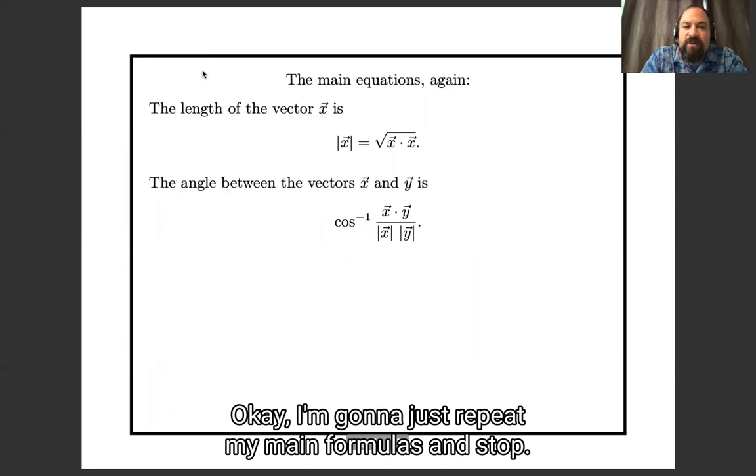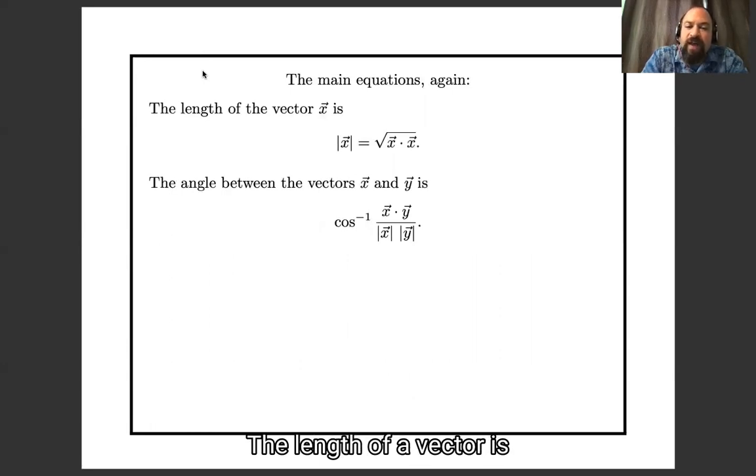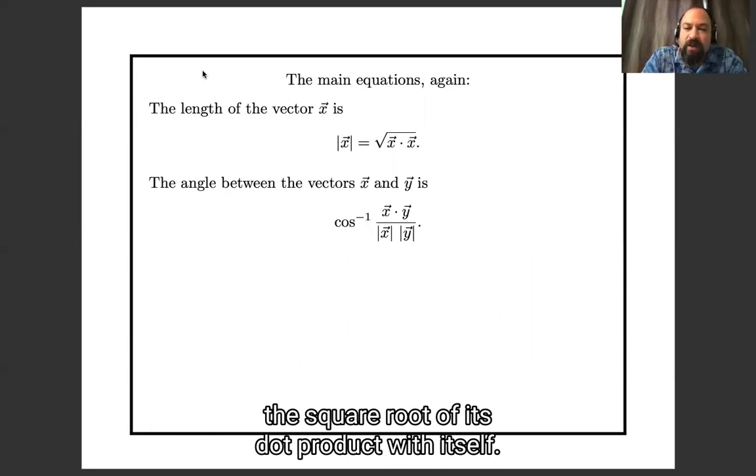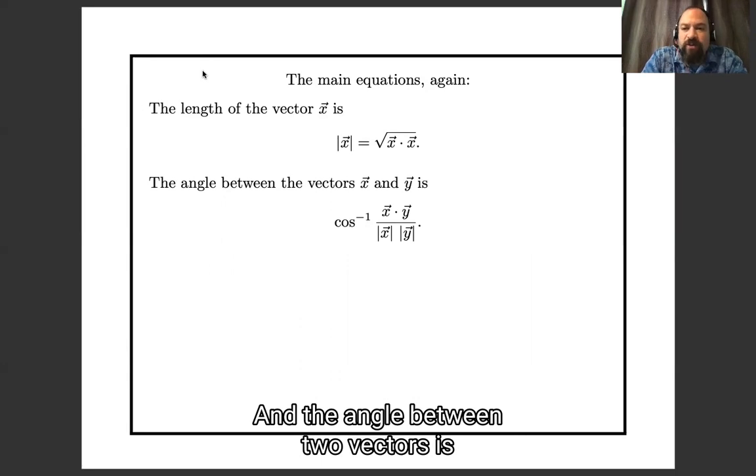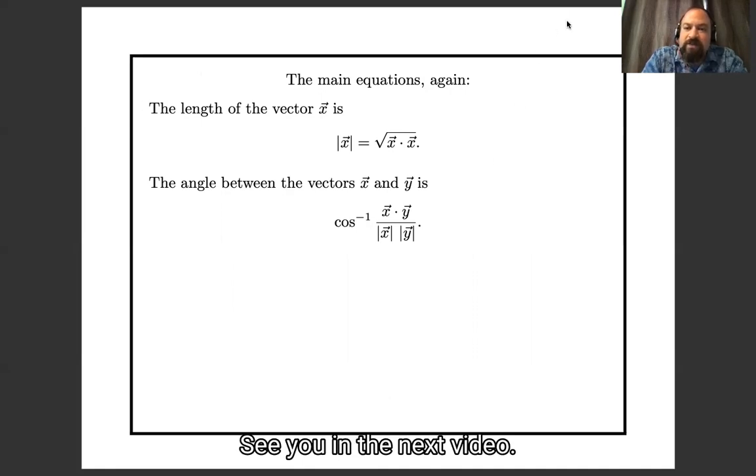Okay, I'm going to just repeat my main formulas and stop. The length of a vector is the square root of its dot product with itself. And the angle between two vectors is the inverse cosine of their dot product divided by the product of their lengths. See you in the next video.